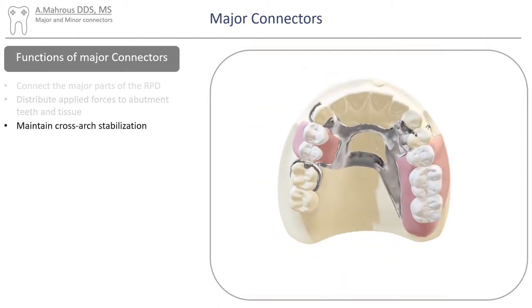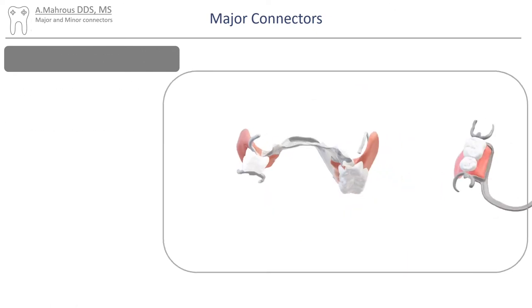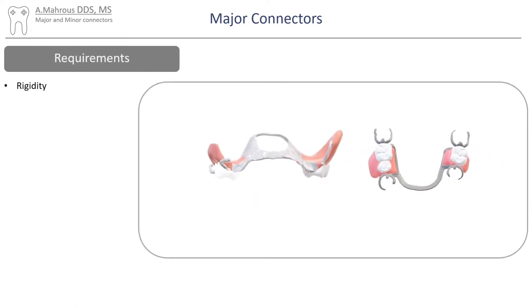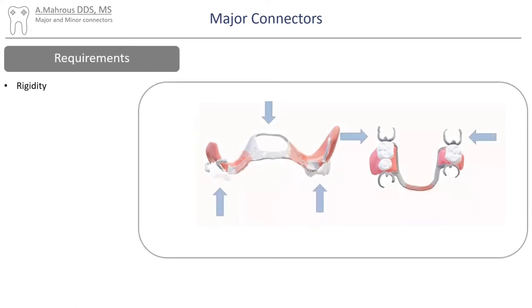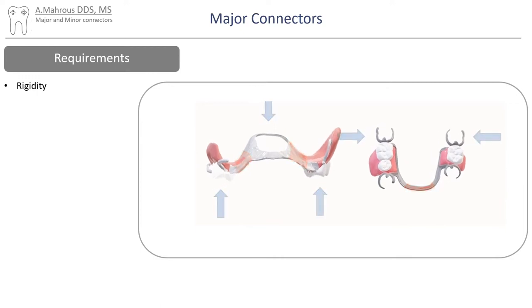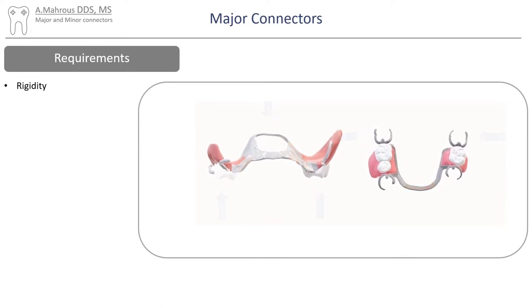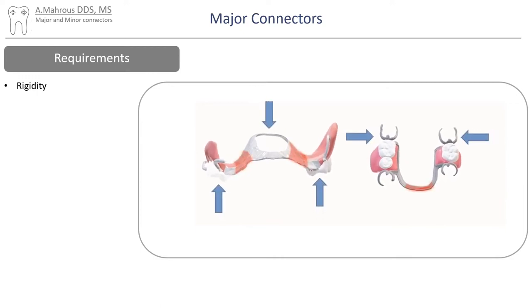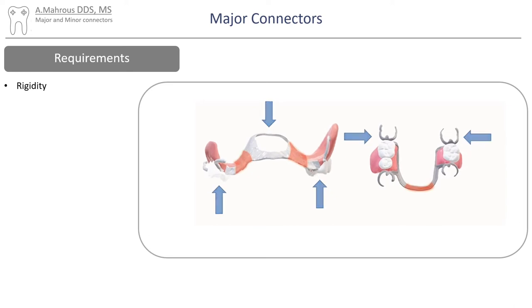Major connectors also contribute to the cross-arch stabilization of the RPD. Now let's move on to the requirements of major connectors. First and foremost is rigidity. In order to fulfill any of its functions, the major connector needs to be rigid and resist flexure.